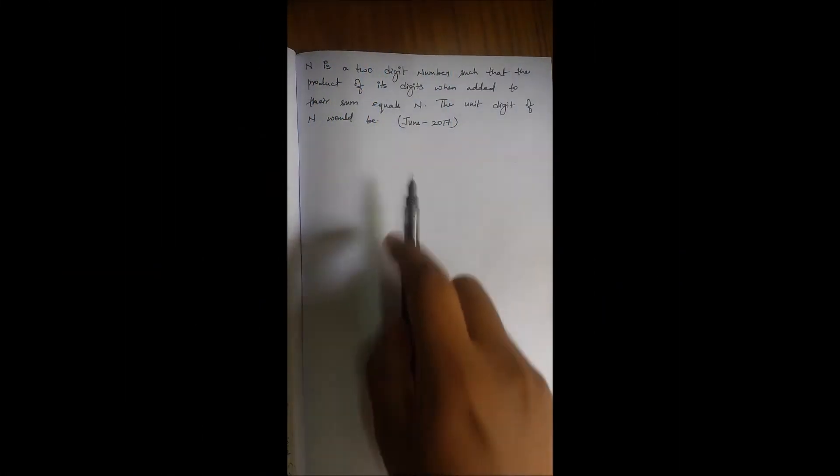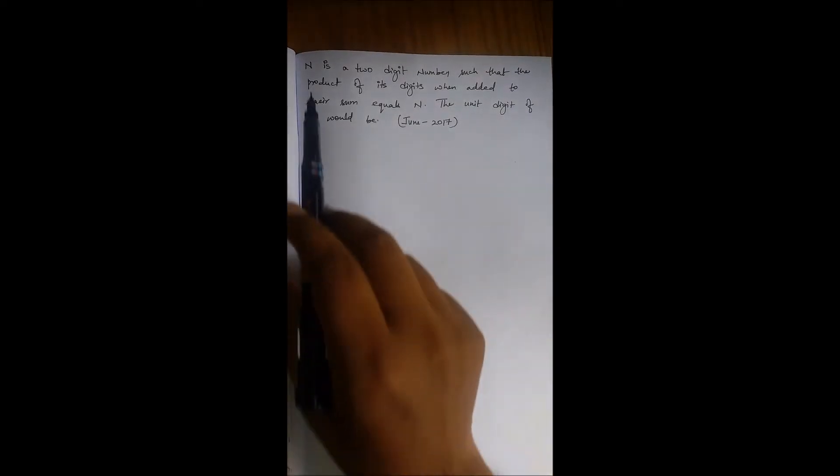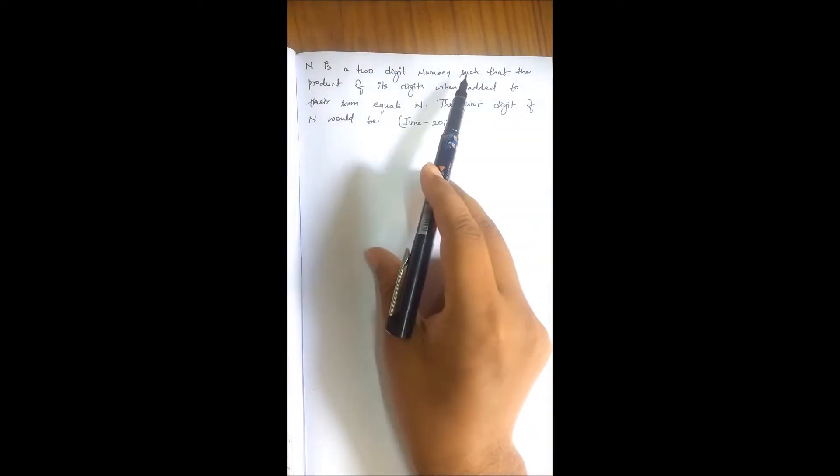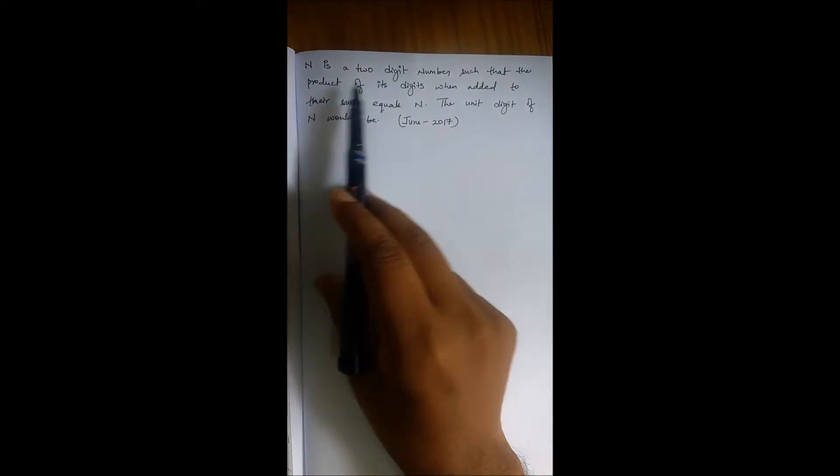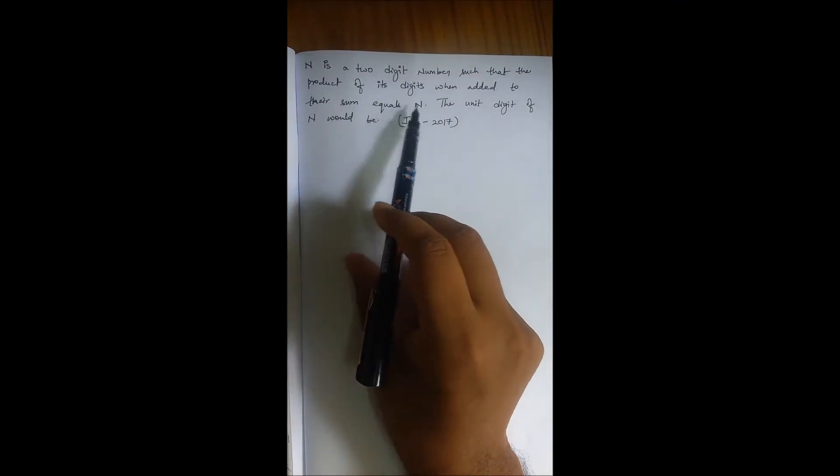In this video, we are going to talk about another question asked in the CSIR exam, June 2017. The question is: Capital N is a two-digit number such that the product of its digits when added to their sum equals the number itself.